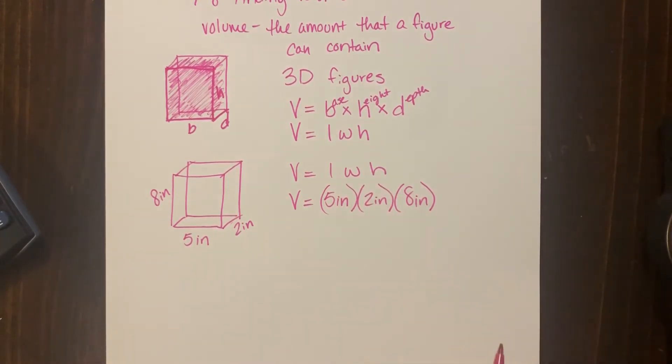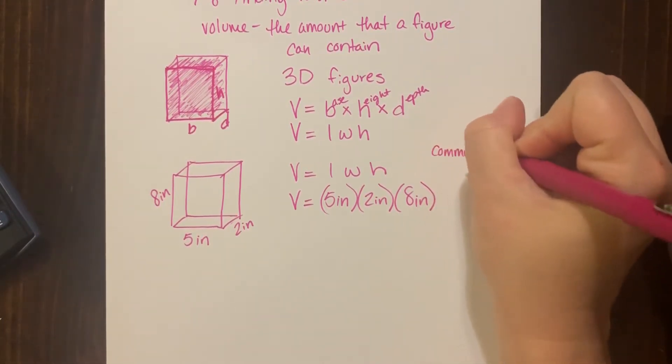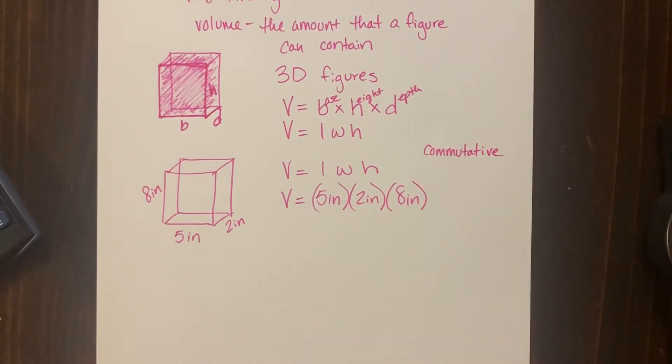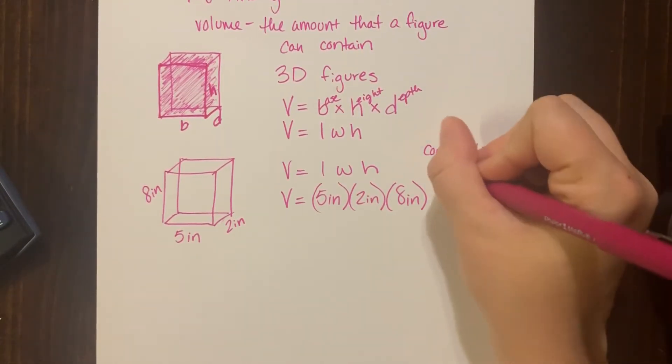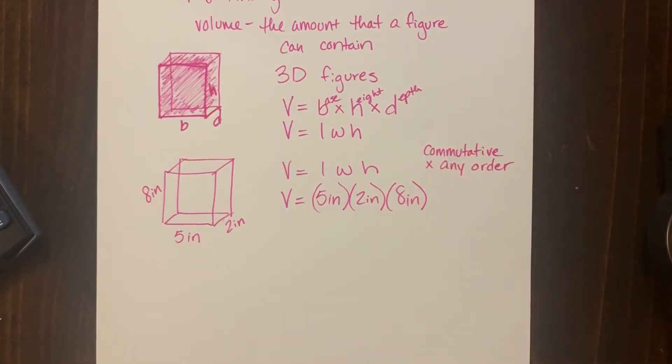Now keep in mind, I can switch these letters all around and multiply them in any order I want to. That is the commutative property. Commutative, all right? Remember, I can multiply in any order that I want to—any multiply in any order. All right, you can do that with addition as well, but those are the only two.